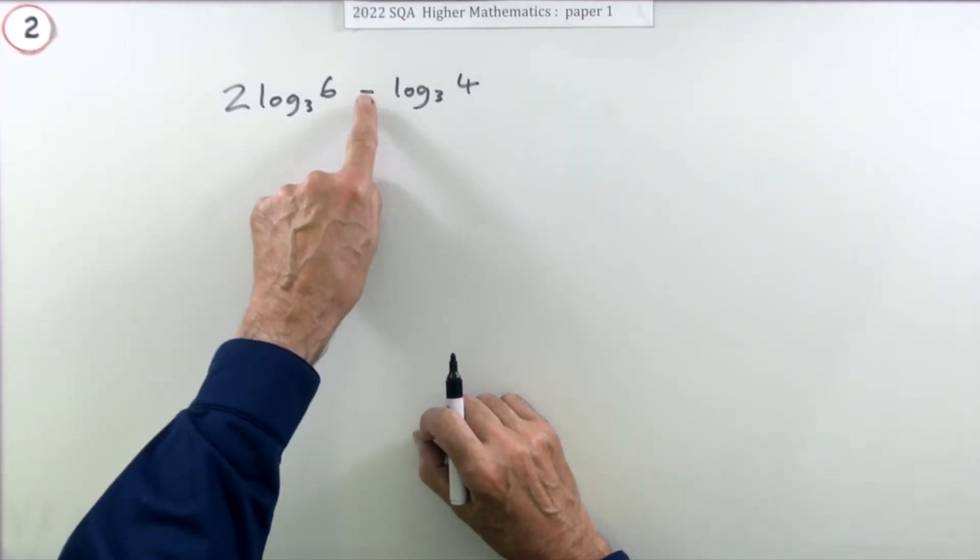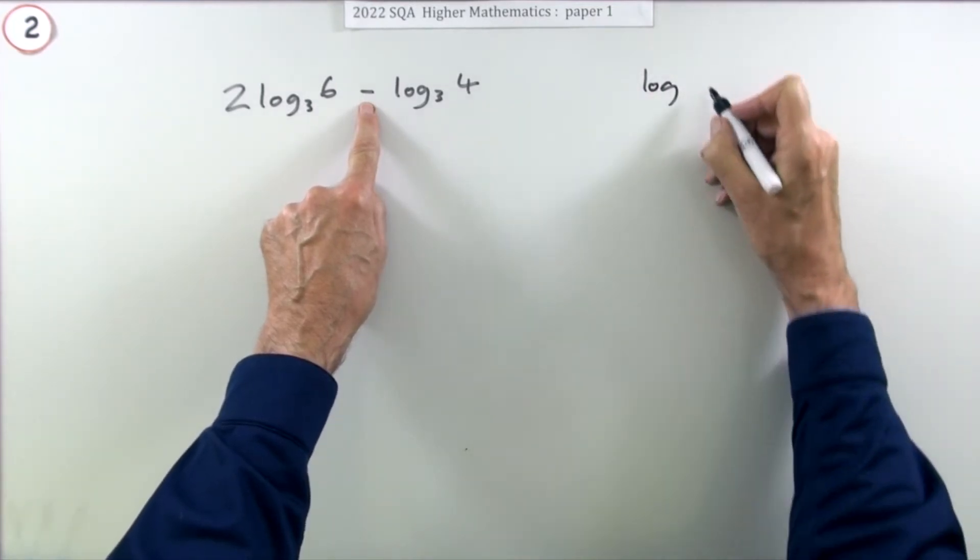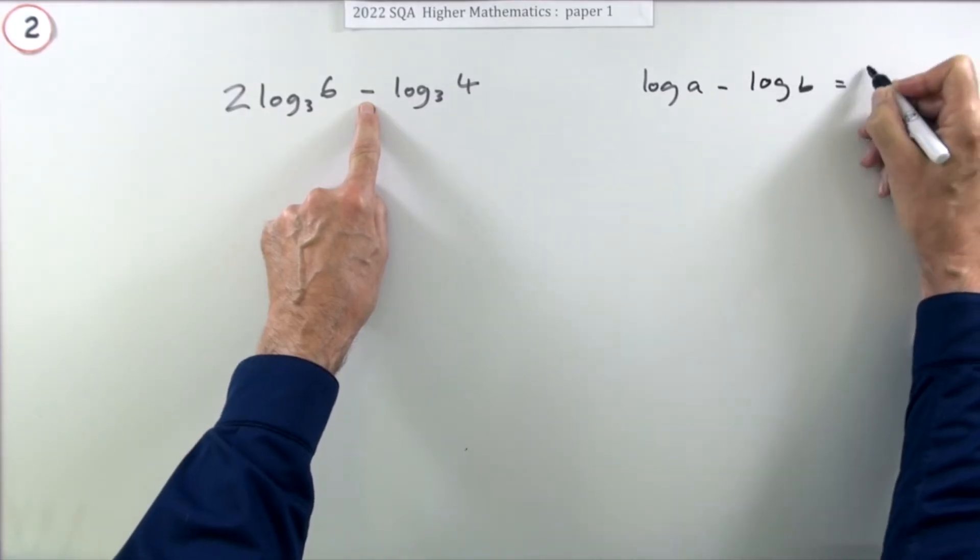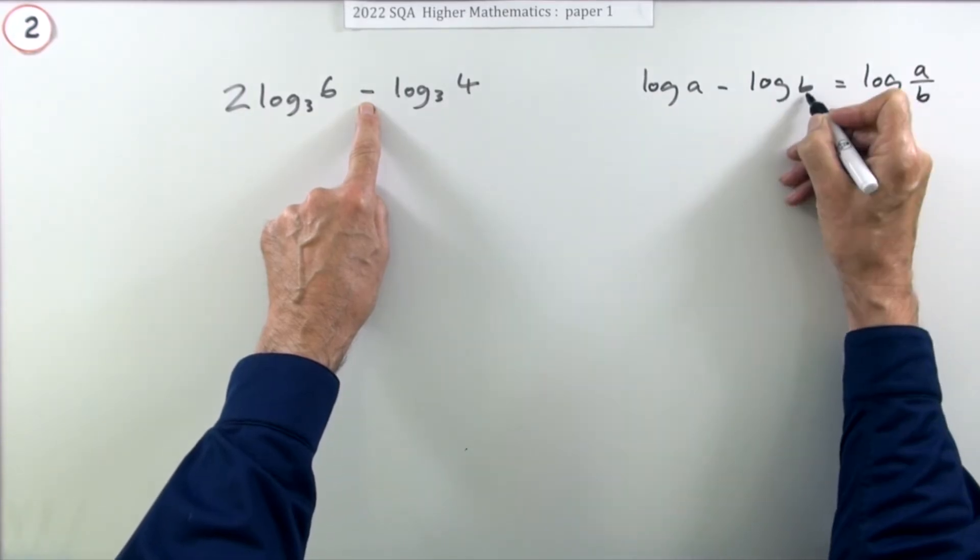Specifically, if you're subtracting two logs, the base doesn't matter - it works for all bases. If you've got log a minus log b, that'll be the log of the quotient a divided by b. Whatever has been subtracted becomes the dividing part.